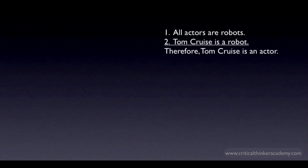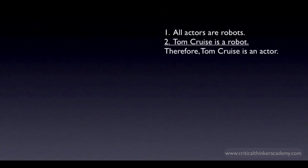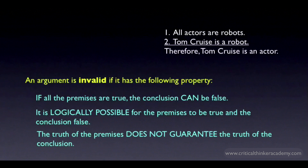Here's an example of an invalid argument. The first premise is the same — all actors are robots — but the second premise is different: instead of assuming Tom Cruise is an actor, we're assuming Tom Cruise is a robot. If both premises are true, does it follow that Tom Cruise has to be an actor? No, it does not follow. It would follow if we said only actors are robots, but the first premise doesn't say that. Robots might do lots of different jobs besides acting — mechanics, teachers, politicians, or whatever. So the fact that Tom Cruise is a robot doesn't guarantee that he's also an actor, and that's what makes this an invalid argument. An argument is invalid just in case it's not valid: even if all the premises are true, it's still possible for the conclusion to be false. The truth of the premises doesn't guarantee the truth of the conclusion.